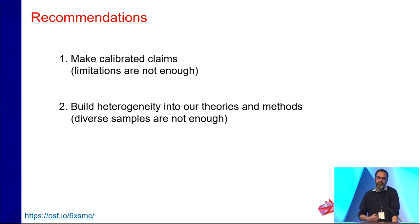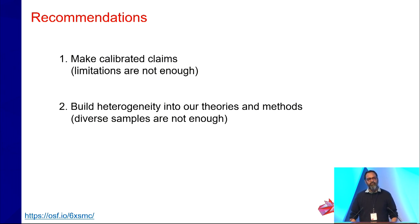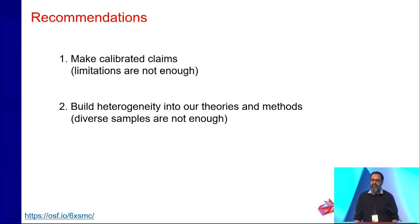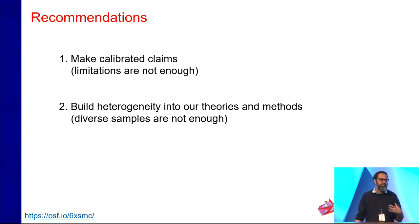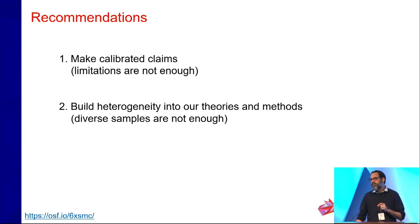The second solution is much more difficult: building heterogeneity into our theories and methods, consistent with what Kevin Esterling discussed yesterday. You have to think about the hows and whys of variability and build that into the system. Importantly, just having diverse samples isn't enough — you still have to make sense of that diversity and understand why you're seeing that variation. Ironically, taking this approach seriously could get us closer to making truly universal claims, but this is hard work.